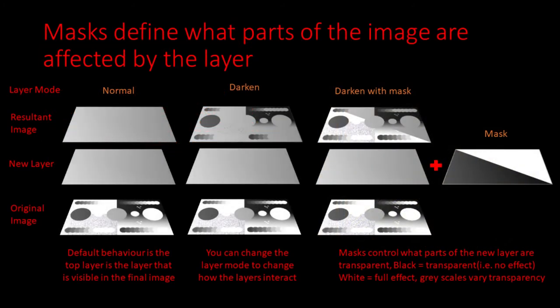Now let us quickly discuss masks. Without masks, the whole layer would be affected by the layer mode. Masks allow us to define, at a pixel level, which pixels are affected. If the mask pixel is black, the corresponding pixel is completely transparent, so the underlying pixel is shown unaffected. If the mask pixel is white, the layer mode has the full effect on the corresponding pixel. All shades of grey in between effectively change the transparency. Masks therefore work a little bit like the opacity slider, but on an individual pixel level.